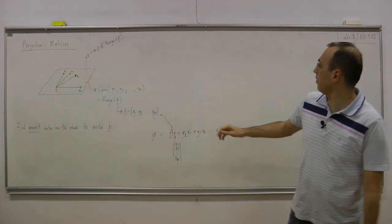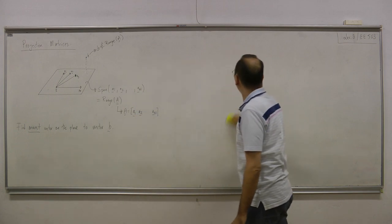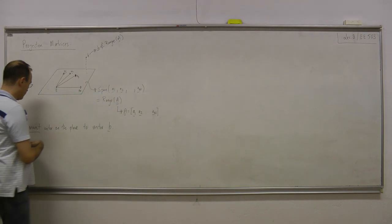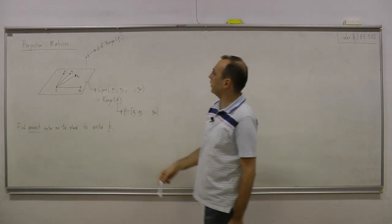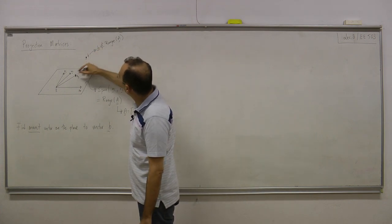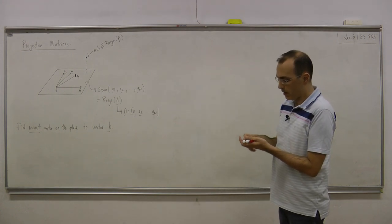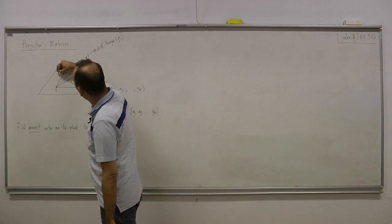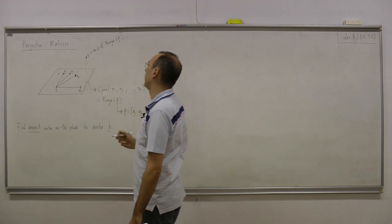Let me define the problem. The problem is finding the nearest vector on this plane spanned by these vectors — the nearest point to point b, which is outside the range space of A. You have seen this problem many times in earlier courses. The question is: is this the nearest point to b, or is that the nearest point, etc.?